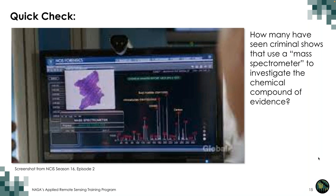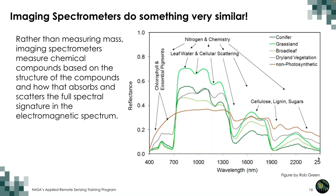As a quick check — think about criminal shows where investigators use a mass spectrometer to analyze the chemical composition of evidence, identifying things like asphalt from a parking lot or a specific plant. We can do something very similar with imaging spectrometers, which measure chemical compounds based on how molecular structures absorb and scatter light across the full electromagnetic spectrum.